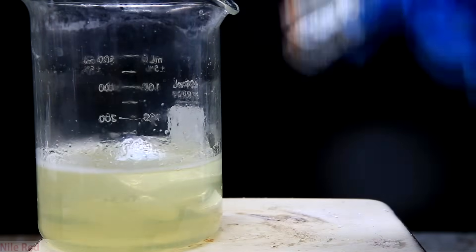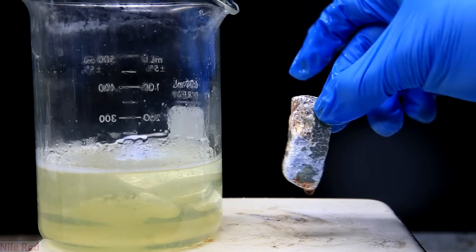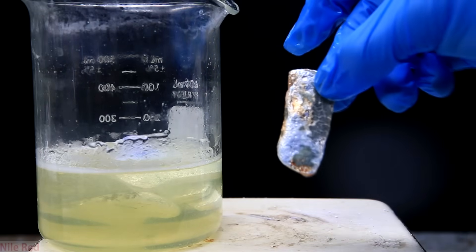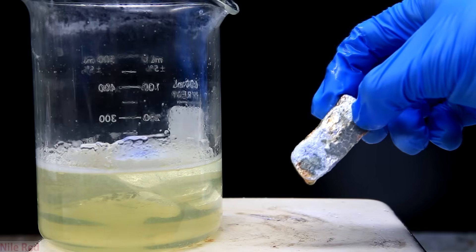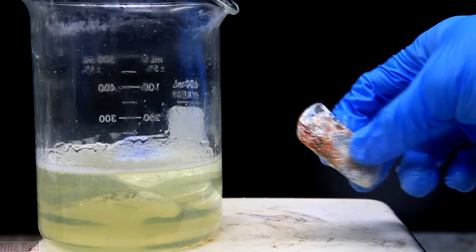After a while this solution becomes yellow as well and if we take out a piece of potassium and hold it in air a bunch of red stuff appears. You can see that this piece has a lot of red on it, but when it's placed back into the toluene isopropanol mixture it immediately disappears.